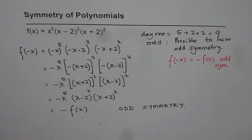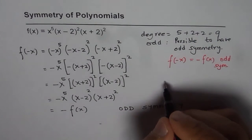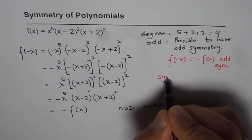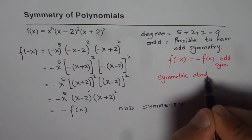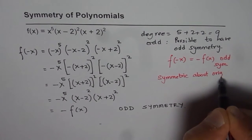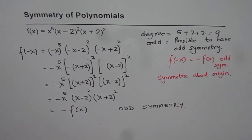Let me write this down: it is symmetric about the origin. About a point and that point is the origin. So the function has odd symmetry.